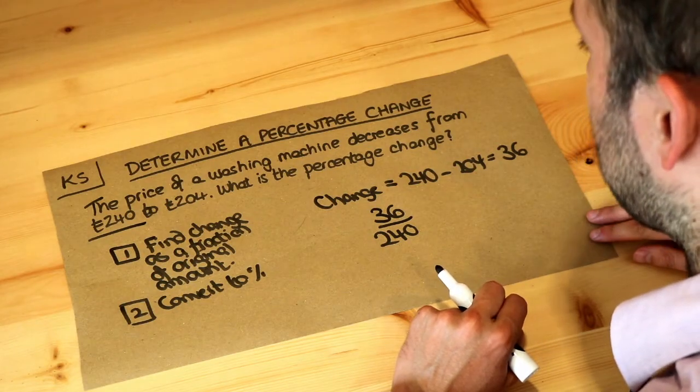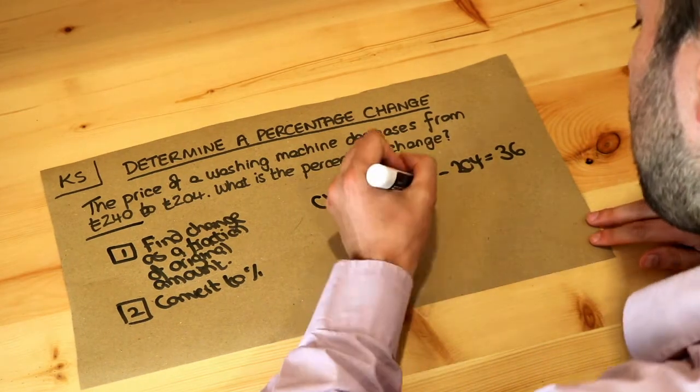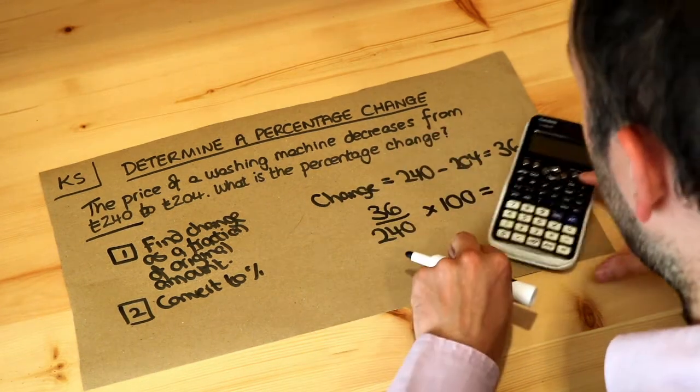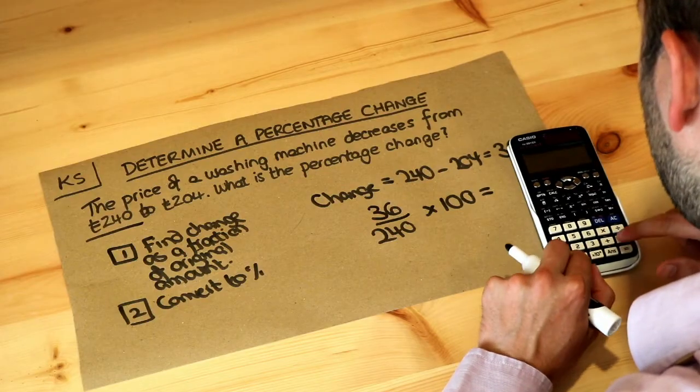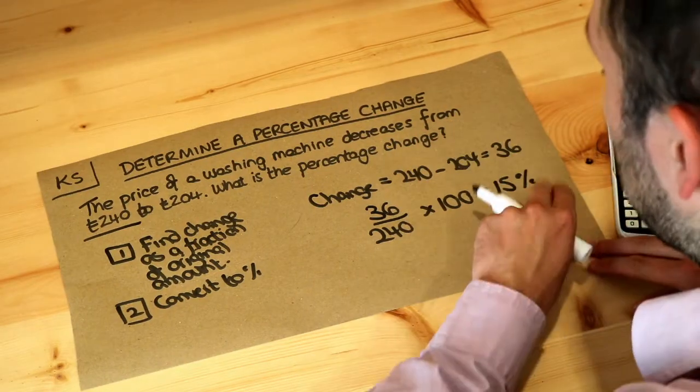Now how do we convert a fraction to a percentage? We can just times it by 100. So times it by 100 and let's do that on our calculator. £36 by £240 times 100 and that gives us 15 and it'll be percent.